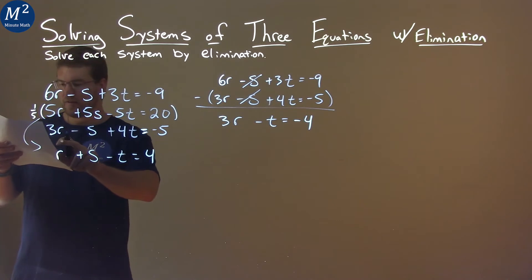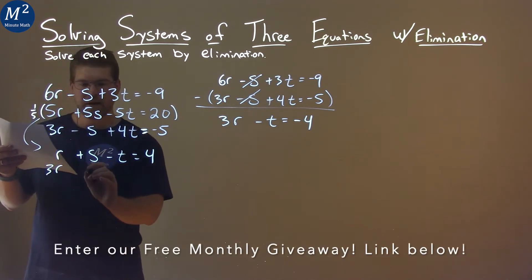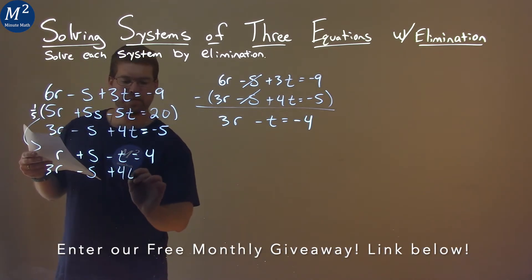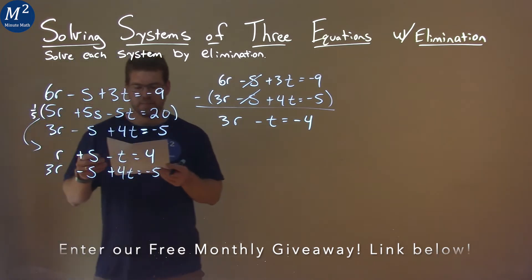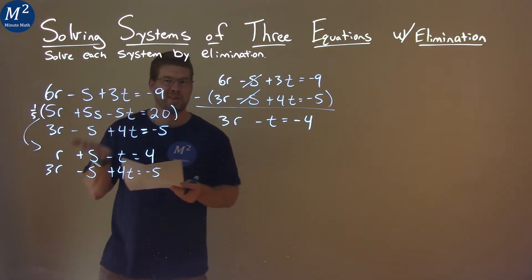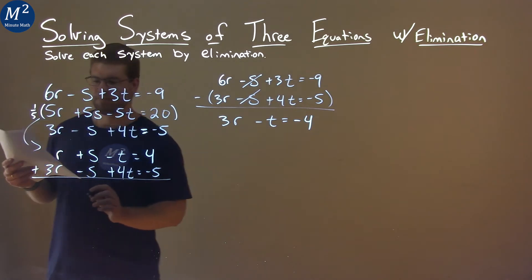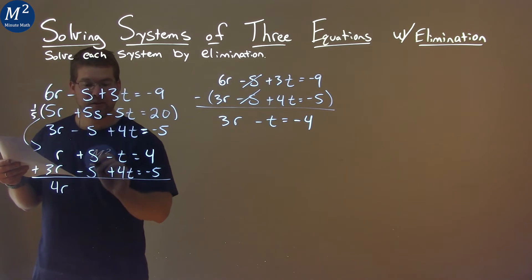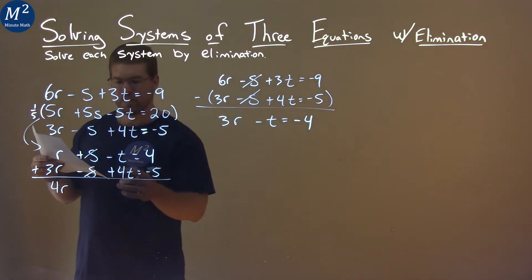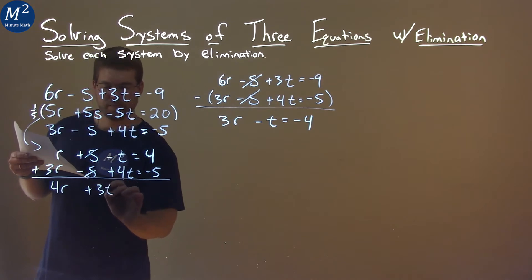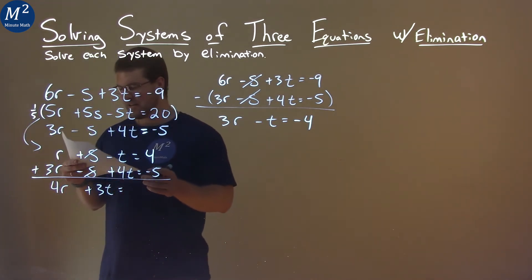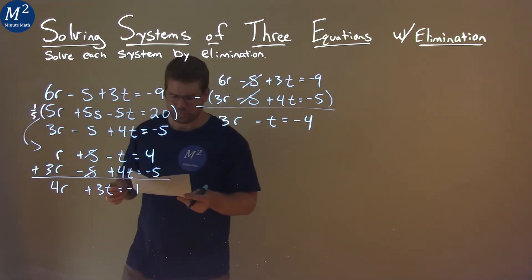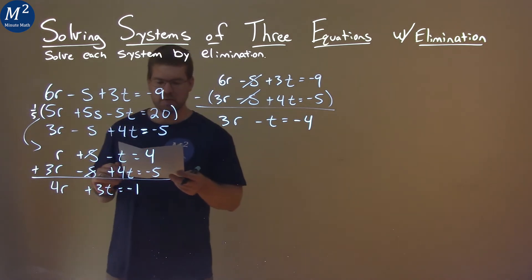We bring down the third equation here. 3r minus an s plus 4t equals negative 5. And look, we add them together and we will eliminate the s's. So it's kind of tricky here. r plus 3r is 4r. The s's cancel when we add them together. And negative t plus 4t is positive 3t. And then 4 added to negative 5 is negative 1. Now we have 4r plus 3t equals negative 1.